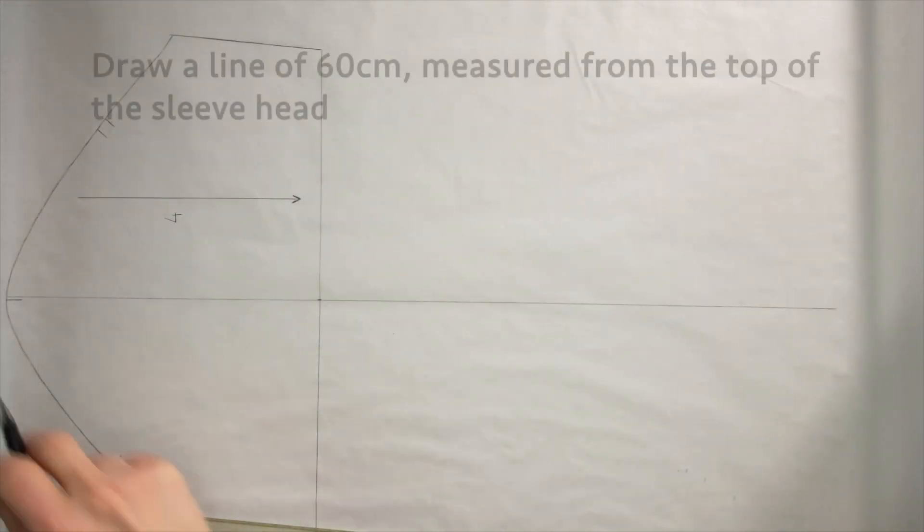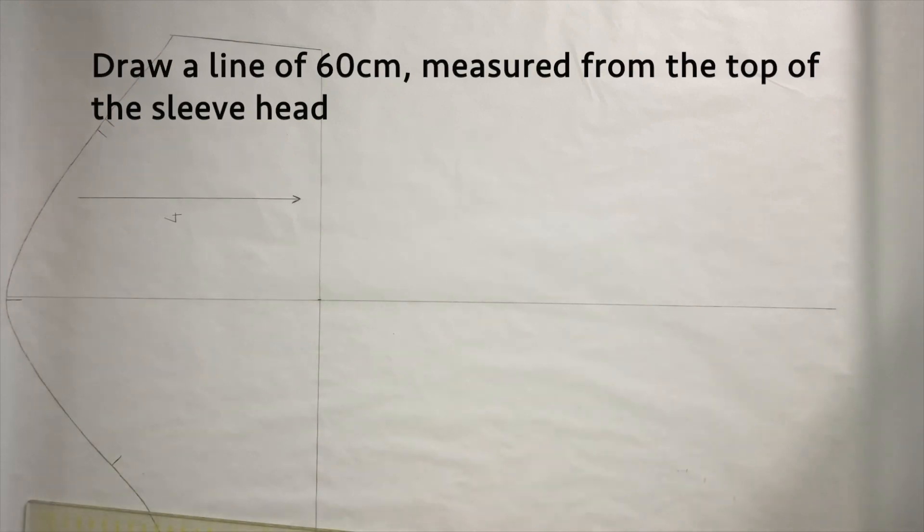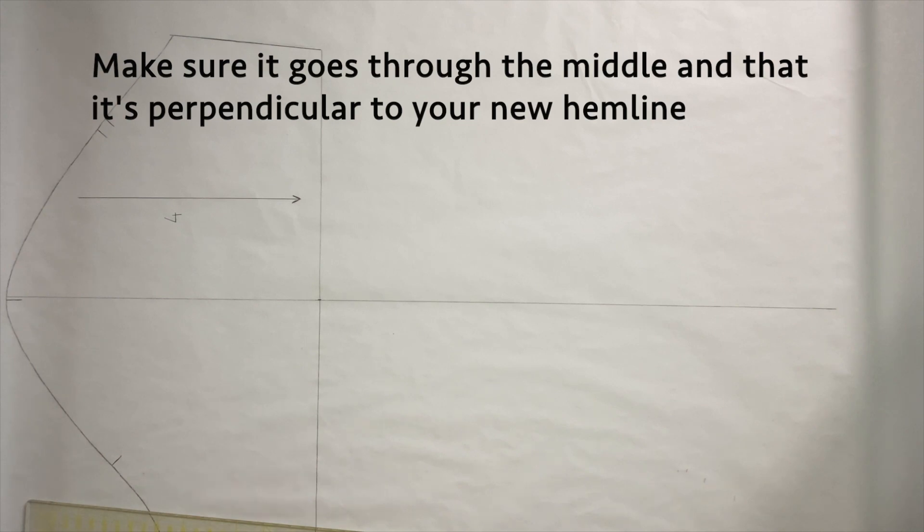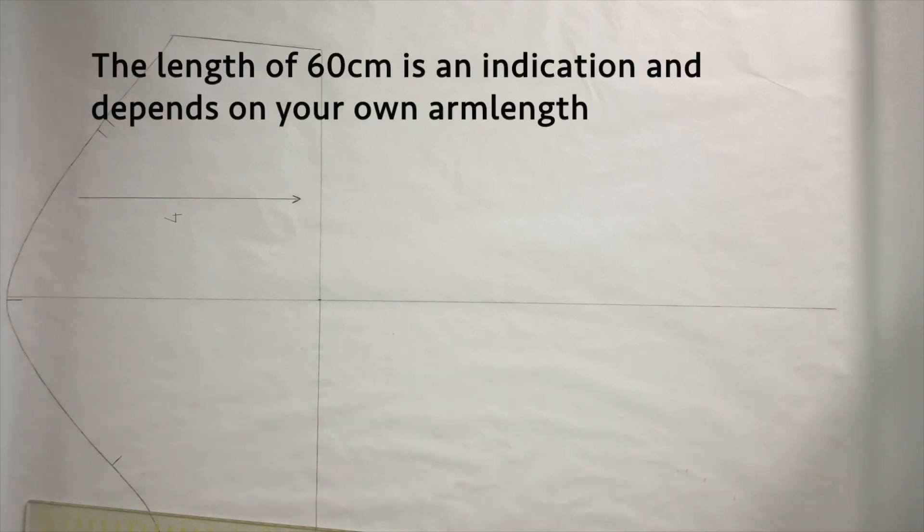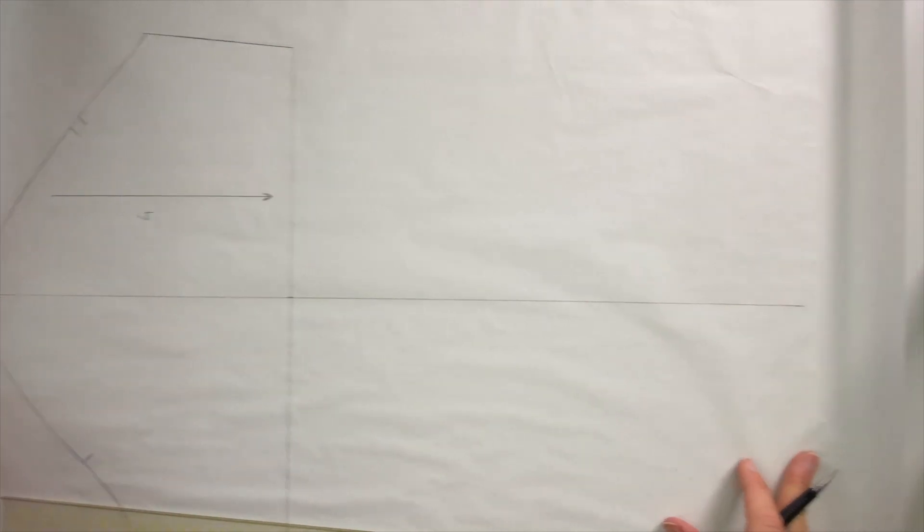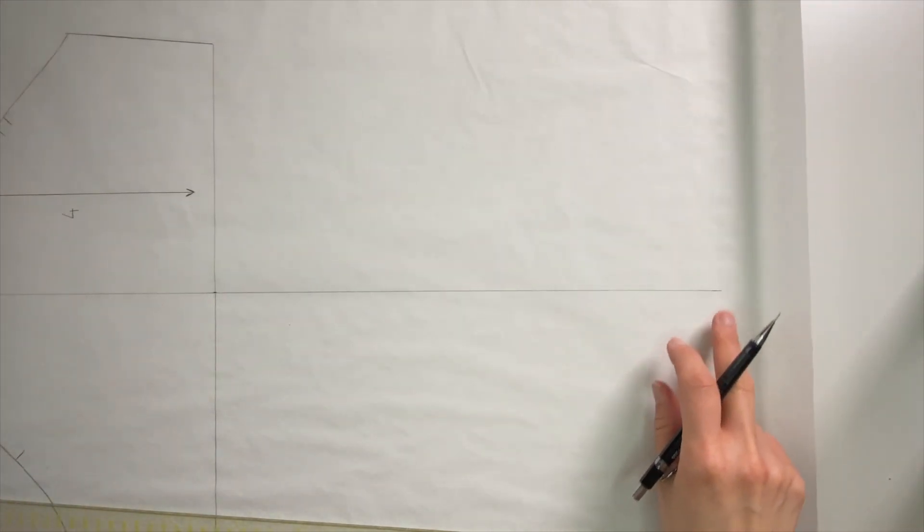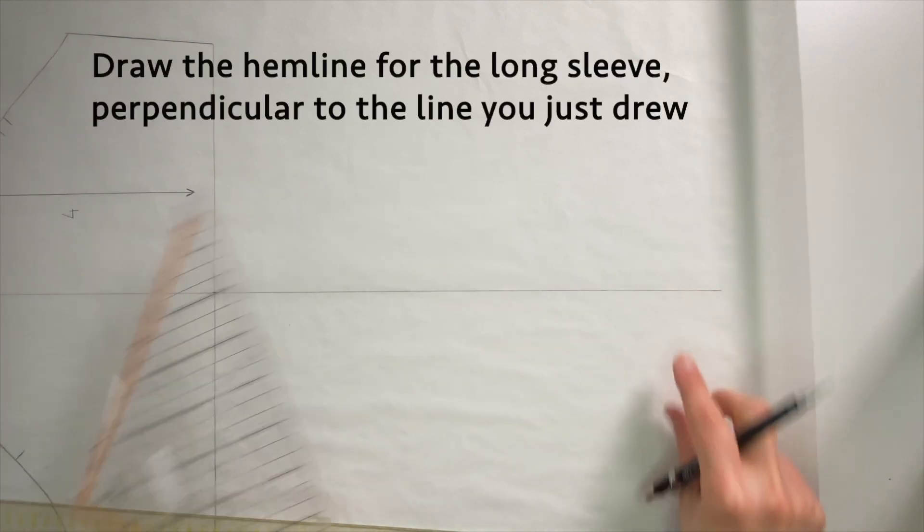Here you can see how I drew the line. This one is 60 centimeters long. 60 centimeters is a bit on average for a long sleeve, but you can of course make this longer or shorter according to your own arm length. Now I'm going to draw the new hemline and this has got to be perpendicular to the line which just drew.